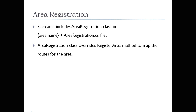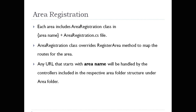Before areas, we used to write our routes in the RouteConfig file, or we did attribute routing. But whenever you start creating areas, you have to define the routes of each area separately, and that is defined in your area registration file. Whenever you request any action method, you have to request it like: area slash controller slash method name.